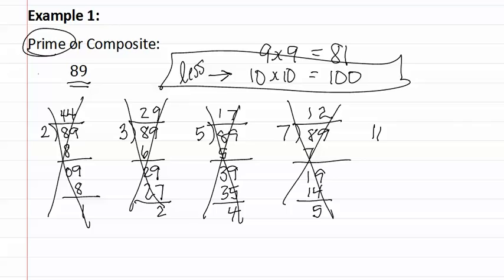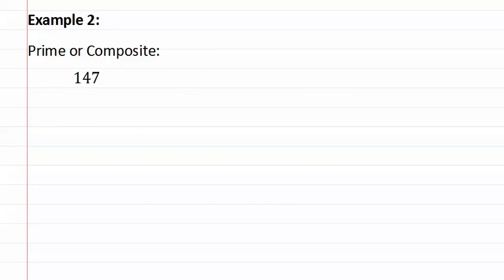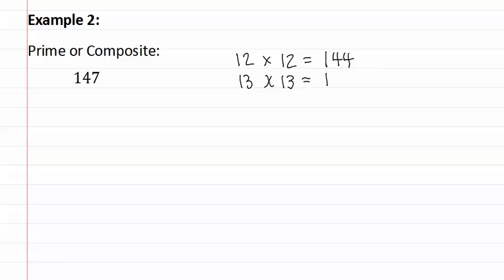Let's look at example two. Example two asks if one hundred forty-seven is prime or composite. Remember, we must find the squares above and below one hundred forty-seven. If we remember that twelve times twelve equals one hundred forty-four, and thirteen times thirteen equals one hundred sixty-nine, this means our number must be less than thirteen, as one forty-seven falls between these two.